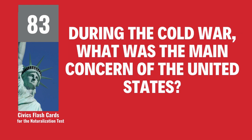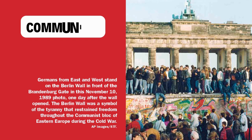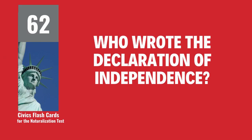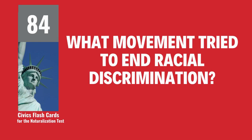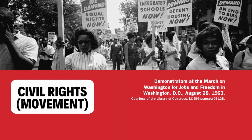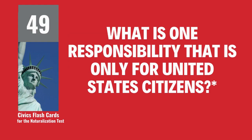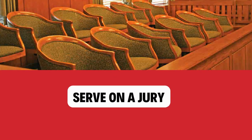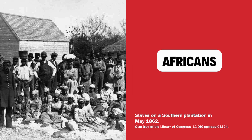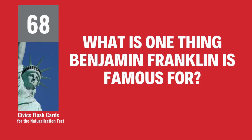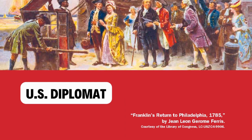During the Cold War, what was the main concern of the United States? Communism. Who wrote the Declaration of Independence? Thomas Jefferson. What movement tried to end racial discrimination? Civil rights movement. What is one responsibility that is only for United States citizens? Serve on a jury. What group of people was taken to America and sold as slaves? Africans. What is one thing Benjamin Franklin is famous for? U.S. diplomat.